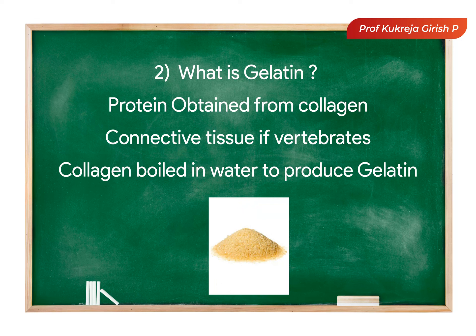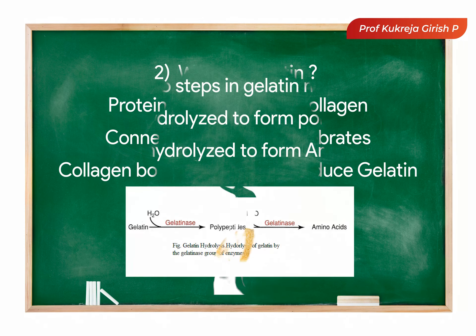What is gelatin? Gelatin is a protein which is obtained from the collagen, the connective tissue of the vertebrates. The collagen is boiled in water to obtain gelatin.